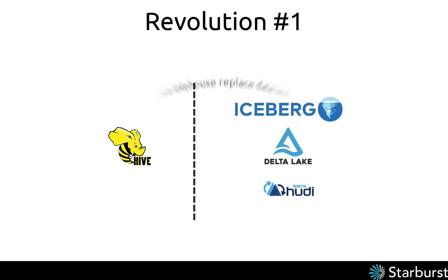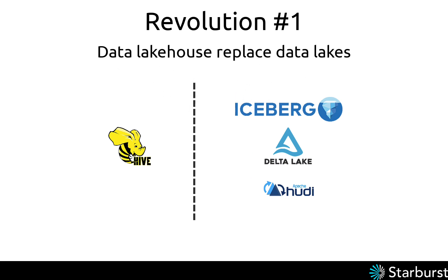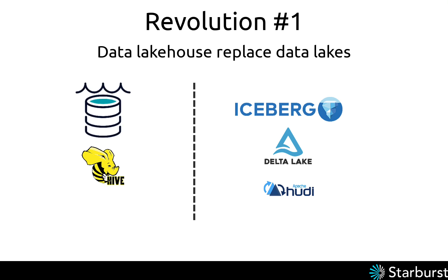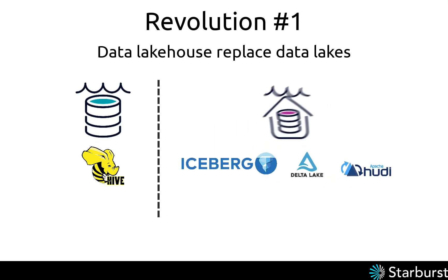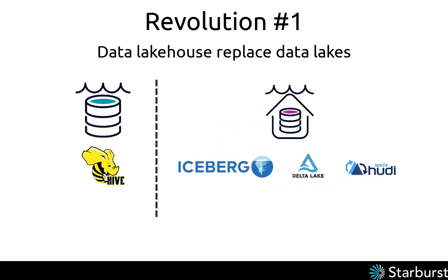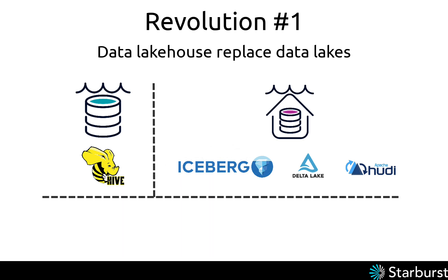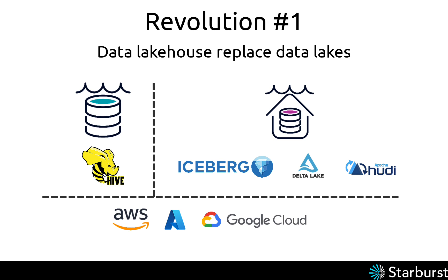Revolution number one: data lakehouses replace data lakes. The first revolution is a movement from the traditional data lake built around Apache Hive to the data lakehouse using a modern table format. Both data lakes and data lakehouses are built on cloud object storage — systems like AWS S3, Azure Blob Storage, or Google Cloud Storage. But that's where the similarities end.